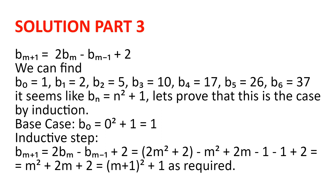So let's prove that b(n) = n²+1 by induction. Our base case is b(0) = 0²+1 = 1, which holds. For the inductive step, b(n+1) = 2·b(n) - b(n-1) + 2 = 2(n²+1) - ((n-1)²+1) + 2, which equals n²+2n+2 = (n+1)²+1, as required. Inductive step complete.